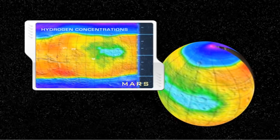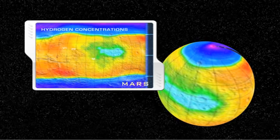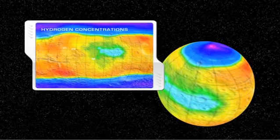The gamma ray spectrometer on NASA's Mars Odyssey orbiter detects and maps these signatures, such as this map of hydrogen concentrations.